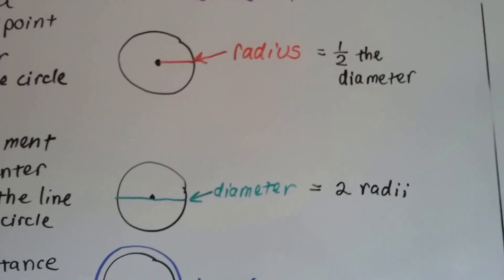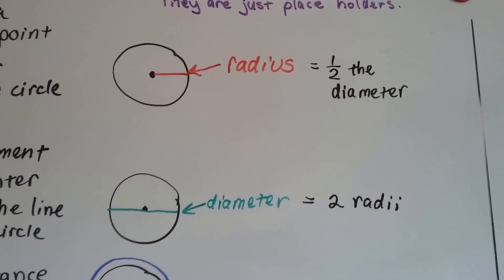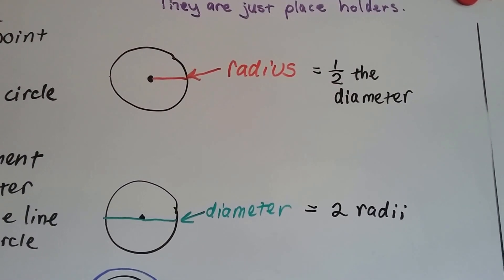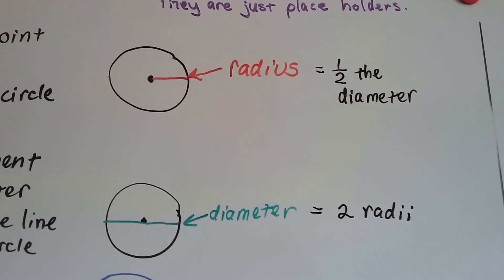Alright, well, the radius is half the length of the diameter, see? If you had two radii, that's how you say two radiuses the proper way, you'd have the diameter.